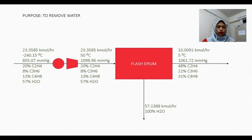This is the flash drum or also known as water separator. The purpose of this unit is to remove water. As you can see here, the molar flow rate from the distillation column 1 is 23.3585 kmol per hour and the temperature is negative 240.15 degrees Celsius. It will go into the heater to increase the temperature to 50 degrees Celsius. Also, the pressure is increased from 855.07 mmHg to 1098.96 mmHg. The butylene, ethylene and propylene and also water will go into the flash drum. And then the water will be removed into stream. This is stream 2 and this is stream 3.